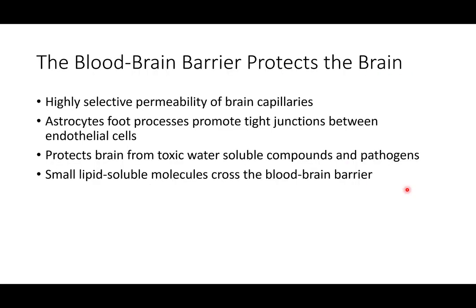The cerebrospinal fluid is permeable to brain capillaries, which feed into it. Specialized cells called astrocytes form tight junctions between epithelial cells, increasing surface area and limiting what can pass through this barrier. They protect the brain from toxic water-soluble compounds and pathogens like bacteria. The only things that can cross the blood-brain barrier are small lipid-soluble molecules like hormones and alcohol.